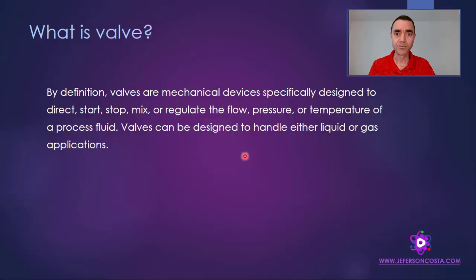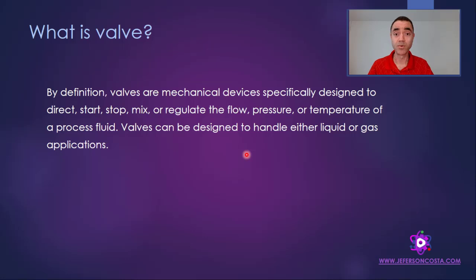Hello guys, I'm back. Today I'll talk to you about valves. You will learn in this video about the most used valves in chemical process engineering and plant design — what are their main characteristics and how to identify them on piping and instrumentation diagrams. By definition, valves are mechanical devices specifically designed to direct, start, stop, mix, or regulate the flow, pressure, or temperature of a fluid. The most important thing to understand is that the working principle of a valve depends on its orifice.